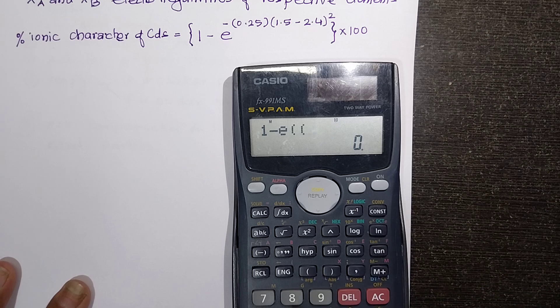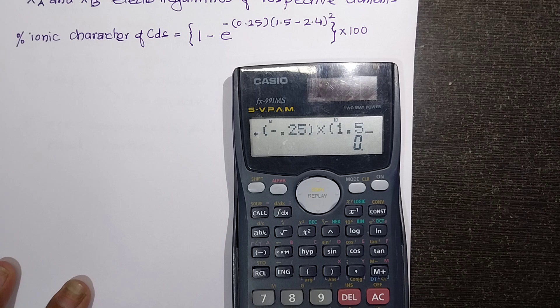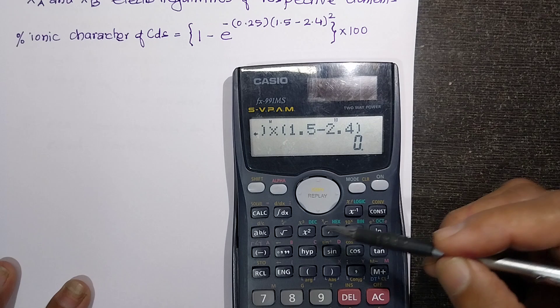We have double brackets minus 0.25 and then this bracket is closed. We open another bracket but before that we need a multiplication sign. Multiplied by open another bracket. This is 1.5 minus 2.4 bracket complete and then we have to square it.